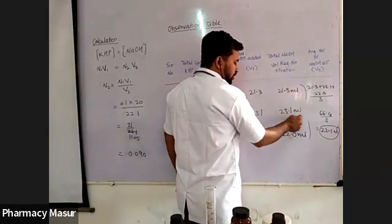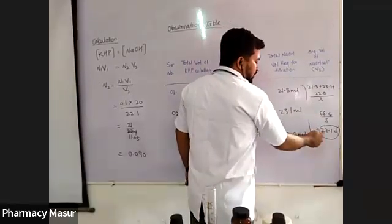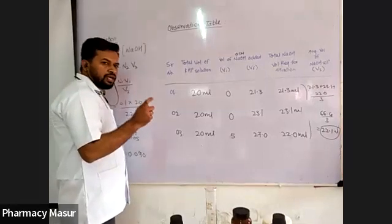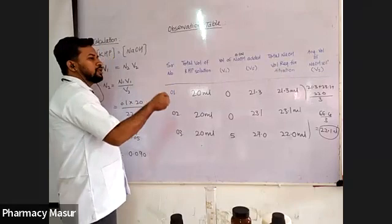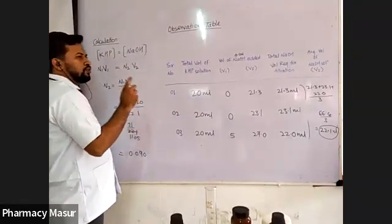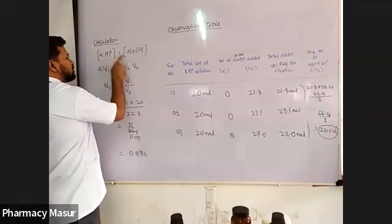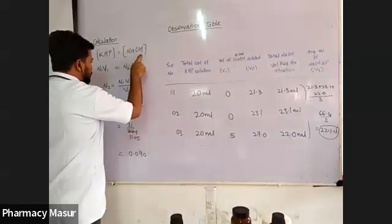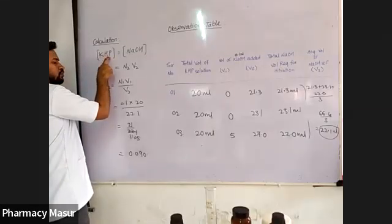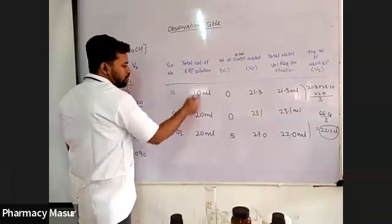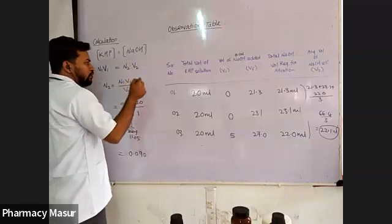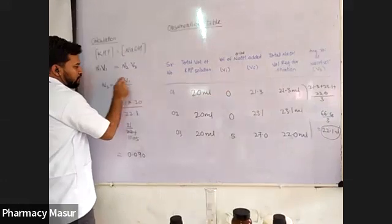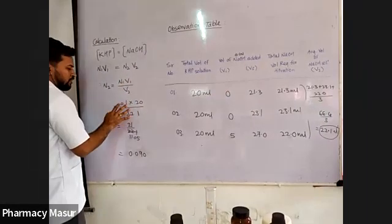The average value of 21.3, 23.1, and 22.0 is 22.1 ml. Now, as per the definition, normality is the gram equivalent weight of any solution or chemical added in 1000 ml. At the equivalence point, N1V1 = N2V2, where N1 and V1 represent KHP values and N2 and V2 represent NaOH values. N1 is the normality of KHP, V1 is 20 ml, N2 is the normality to be determined, and V2 is the average burette reading.